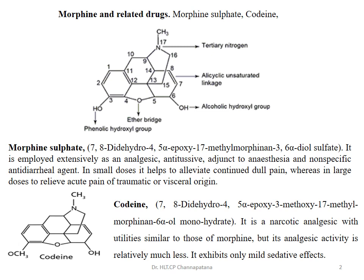The IUPAC name of morphine is 7,8-dihydro-4,5-alpha-epoxy-17-methyl-morphinan-3,6-alpha-diol sulfate. It is extensively used as an analgesic, also possesses antitussive property, can be used in conjunction with anesthesia, and is a non-specific antidiarrheal agent used for loose motion and dysentery. In small doses it is used for dull pain, whereas in large doses it can be used to relieve acute pain.